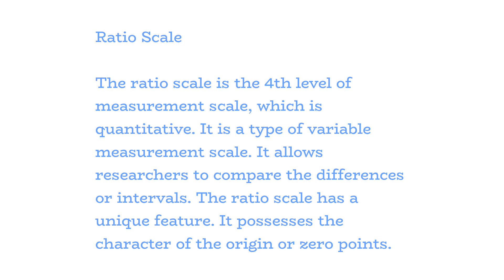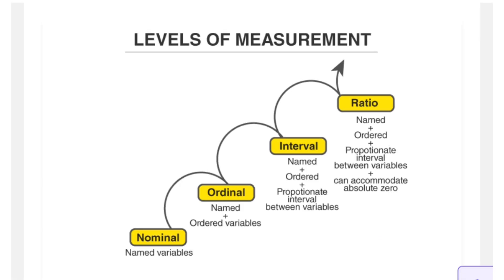The ratio scale has a true zero point. For example: What is your weight in kilograms? Less than 55 kg, 55 to 75, 76 to 85. Neighboring points are equal intervals.